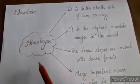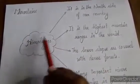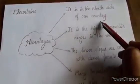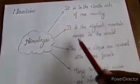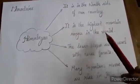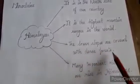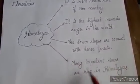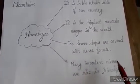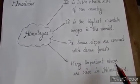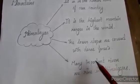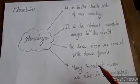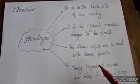We also learned about the Himalayas. It is on the northern side of our country and is the highest mountain range in the world. The lower slopes are covered with dense forest, and many important rivers arise in the Himalayas — the Ganga, the Yamuna, and the Brahmaputra. Please take notes from this.